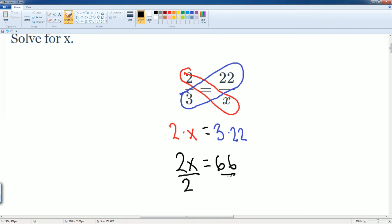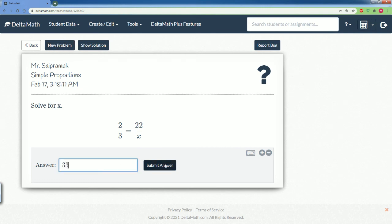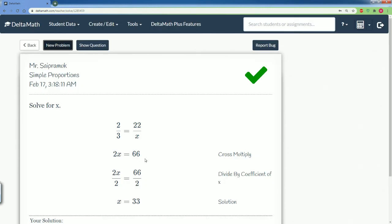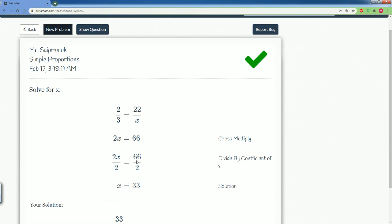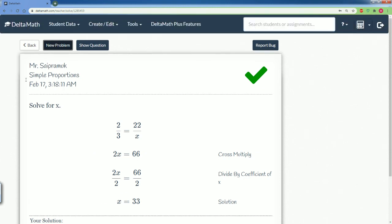Divide by 2 on both sides. You now get x equals 33. Okay, good. Let's check our work. 33, submit. And there you go, we got it correct. So there you go, that is how you do simple proportions.